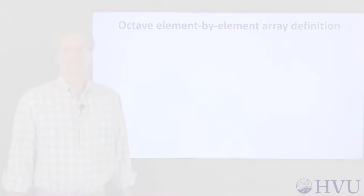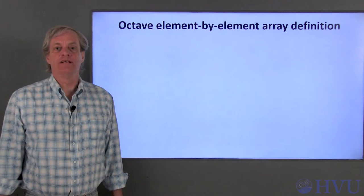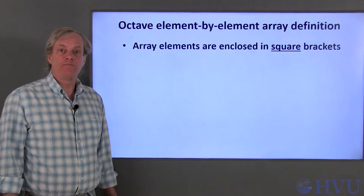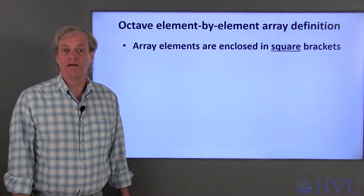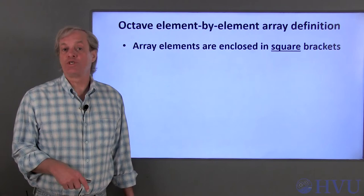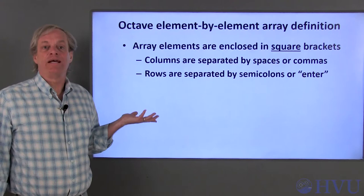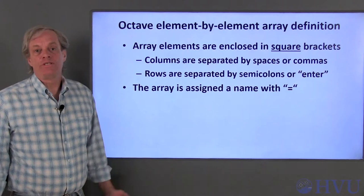Creating arrays can be done in a variety of ways. The first approach is to create the array by individually specifying every element. To specify that the values being typed are going to be in an array, enclose the values in square brackets. By default, the first value you specify will be in the first row and first column of the array. Successive columns are separated by spaces or commas. Successive rows are separated either by semicolons or the Enter key. All variables must be assigned a name, placed to the left of an assignment operator, an equal sign, with the array values to the right.